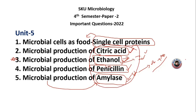So friends, we have covered 5 units and reviewed all the important questions. If you are interested, you need a 60 to 90% score. You will get long answers and short answers — one or two short answers, but maximum long answers.